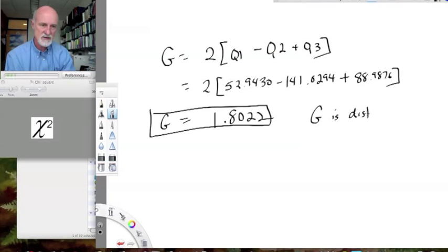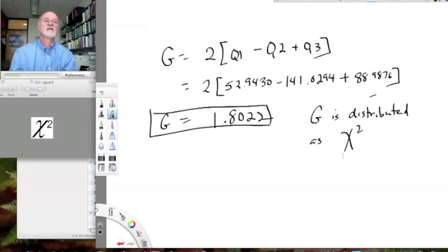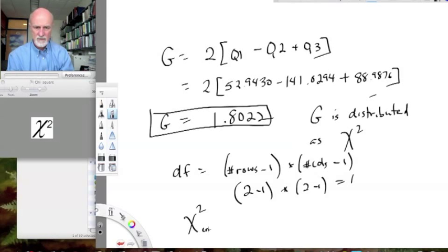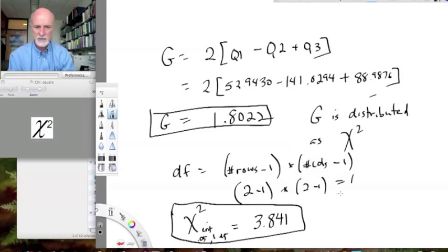Now, g is distributed as chi square. So, we actually use a chi square table to look up the statistical significance of that g. Now, our degrees of freedom, in this case, is the number of rows minus 1 times the number of columns. So, in this case, we have 2 minus 1 times 2 minus 1, or 1 degree of freedom. So, we want to look up a chi squared critical value .05 with 1 degree of freedom. And we can look that up in a table, and we see that that's 3.841. I just looked that up in a table. You can look up online if you want. There are plenty of chi square tables online.